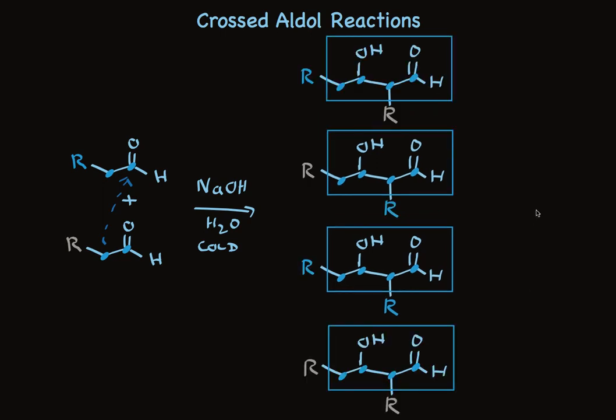So crossed aldehydes typically don't work. But if we could adjust the structures of these two, so that one could enolize and the other couldn't, and the one that can't enolize readily undergoes nucleophilic addition, you can have two reacting partners. One that prefers to be an enolate and the other one that prefers to undergo addition. And under those conditions, the crossed aldehyde works. Let me give you a couple examples.